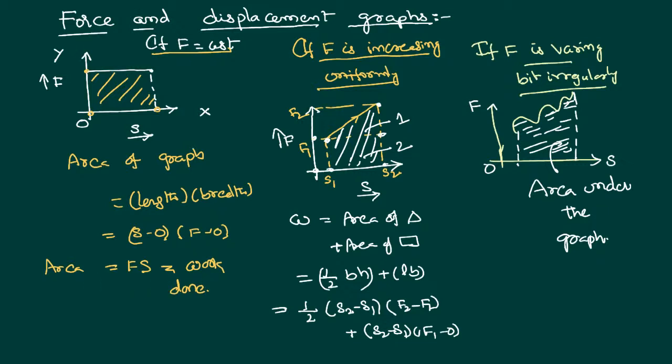Let us imagine another situation where force is not constant but is varying, increasing in a uniform way. Then we will get this kind of graph. It is very clear that again the area under the graph gives you the work done, as we have proved in the previous part.